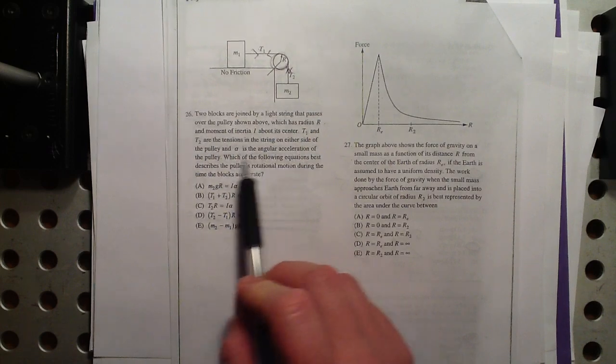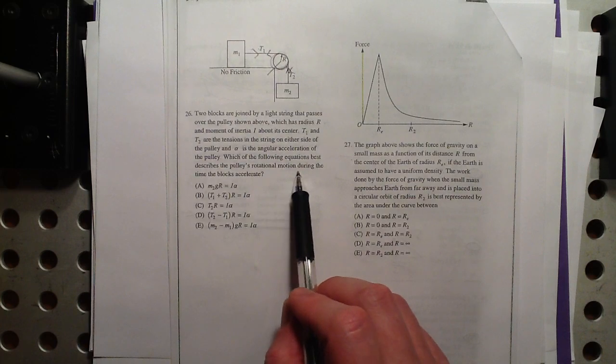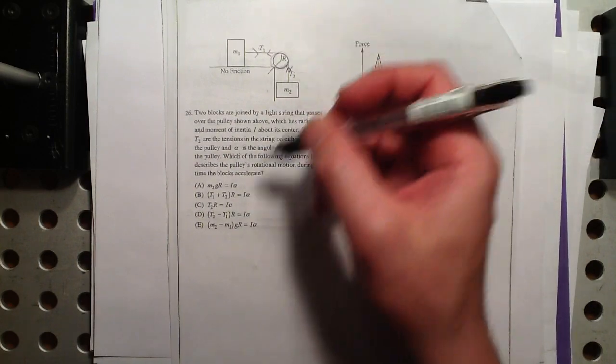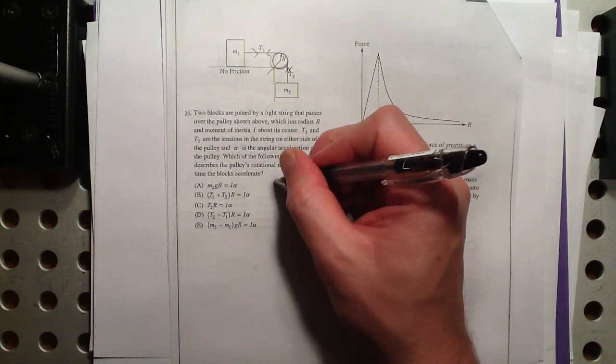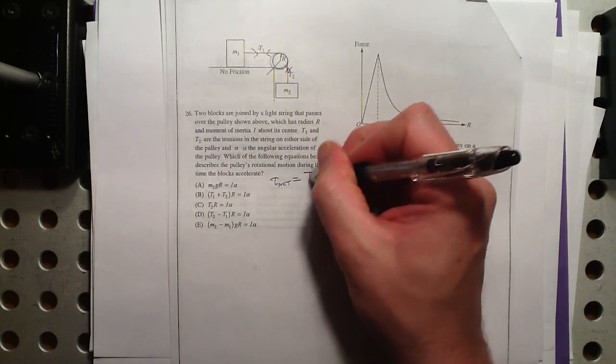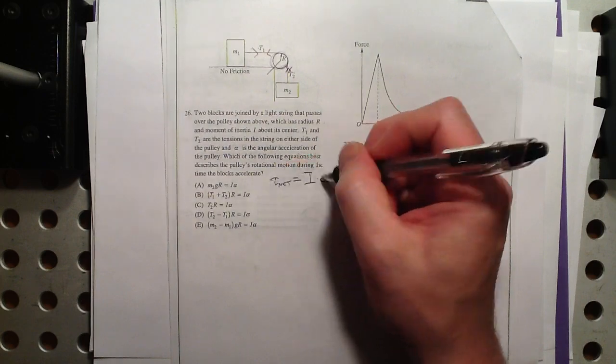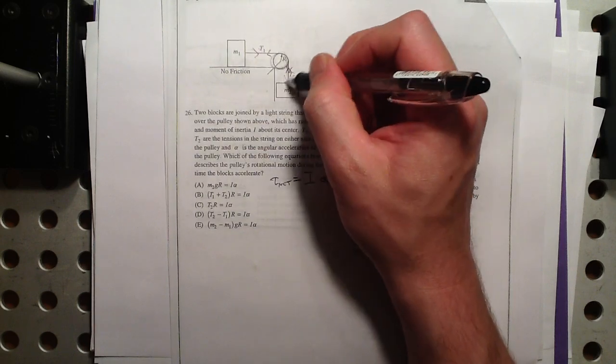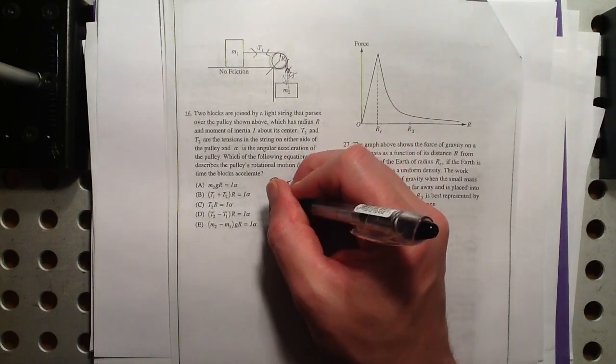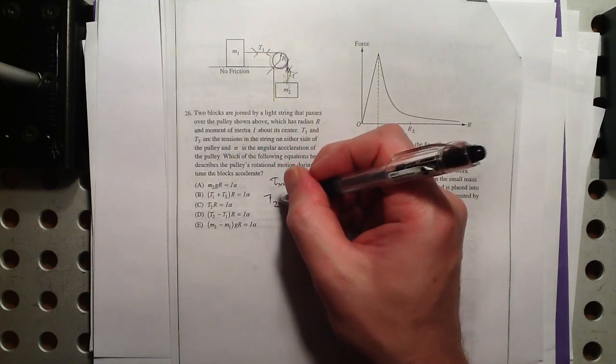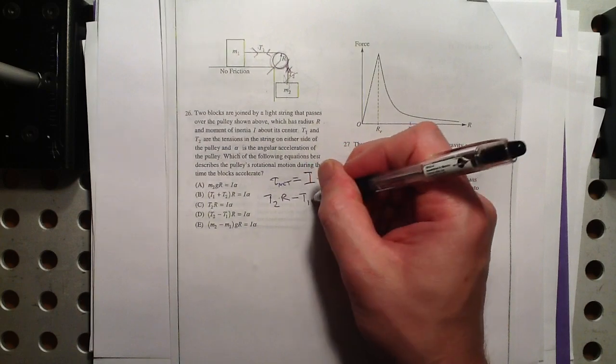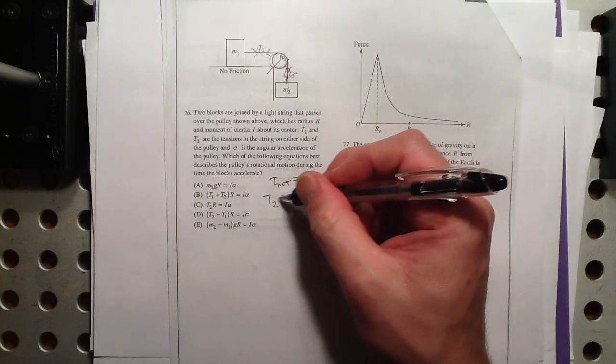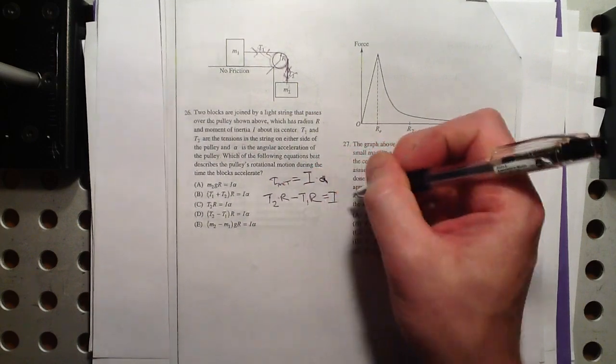The angular acceleration is alpha, which of the following equations best describes the pulley's rotational motion during the time the blocks accelerate. Let's see. Let's set up. Looks like we've got lots of moments of inertia and torque, so let's try this. Net torque is equal to moment of inertia times angular acceleration. That's the rotational form of Newton's second law. What would the net torque be? Let's take this to be the positive direction. So the torque here would be T2R minus T1R. This torque is moving in this direction. This one is fighting in the other direction against it, but this one's winning, right? So T2R minus T1R would equal to that.